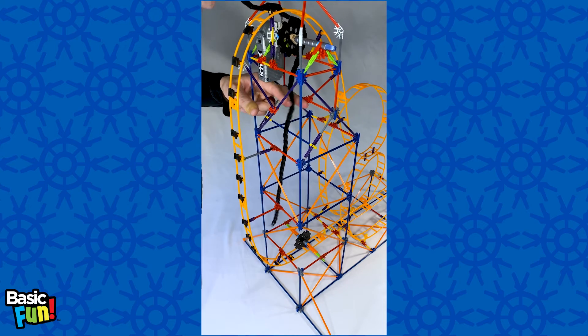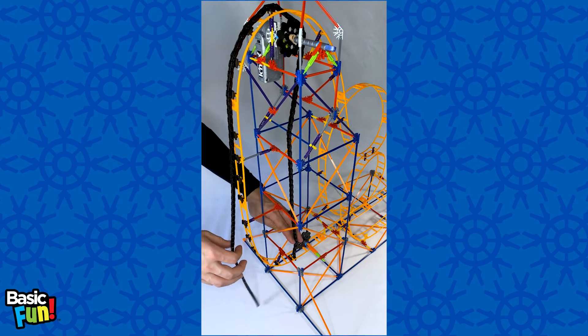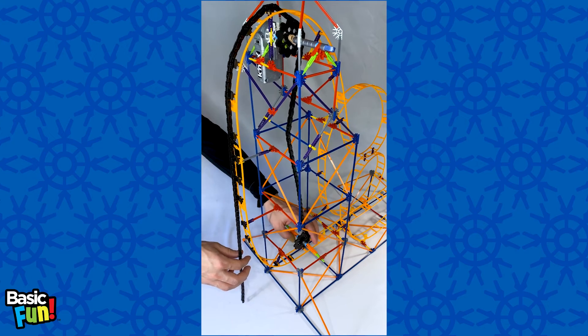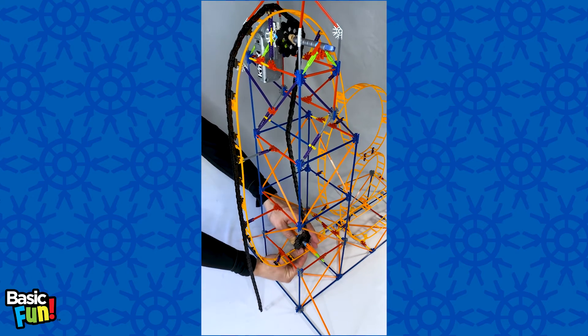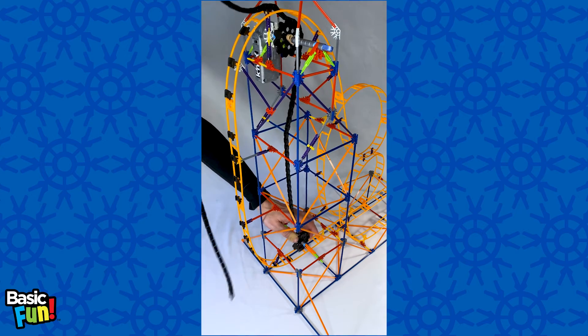Just keep feeding it through. And then at this point you want to make sure the chain goes over this side of the sprocket and then goes between the track before coming out this opening. And again, just let it fall through here.